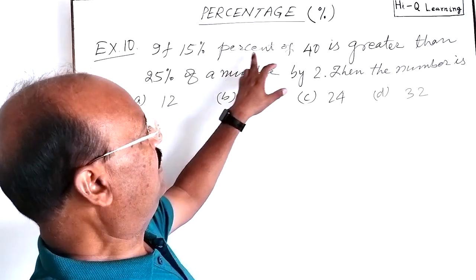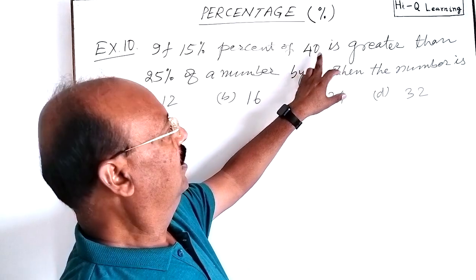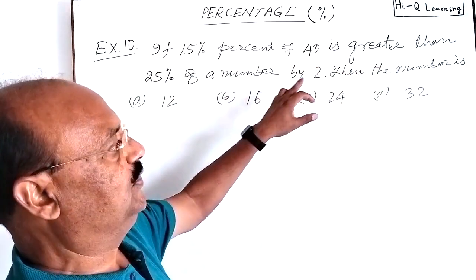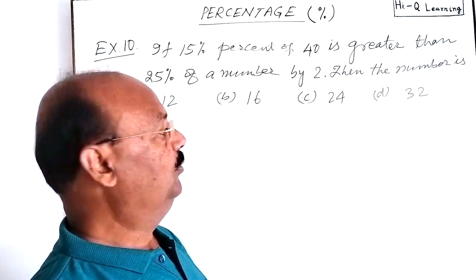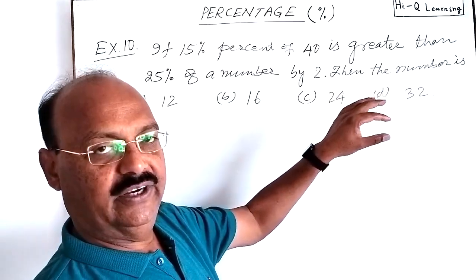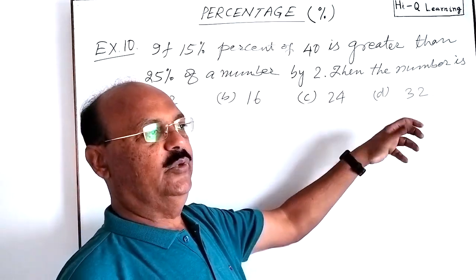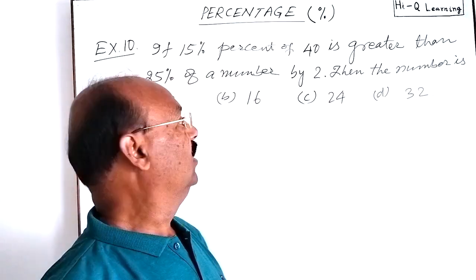Here the question is: if 15% of 40 is greater than 25% of a number by 2, then the number is? We have to find out the required number. Four options are given A, B, C and D. We have to select the correct answer.